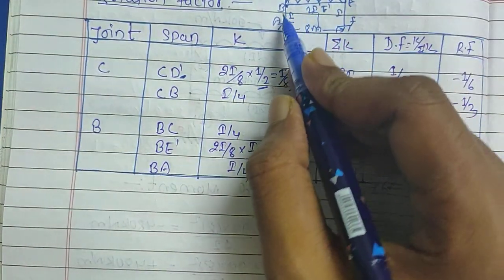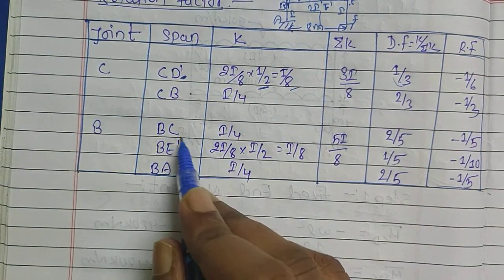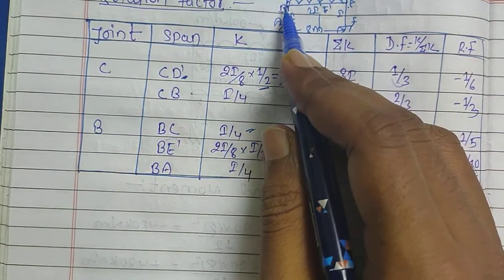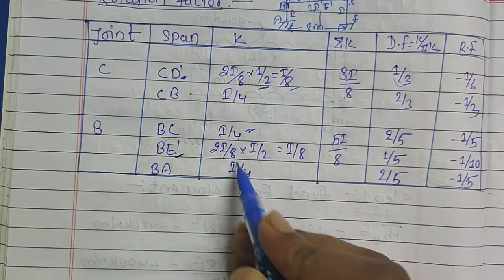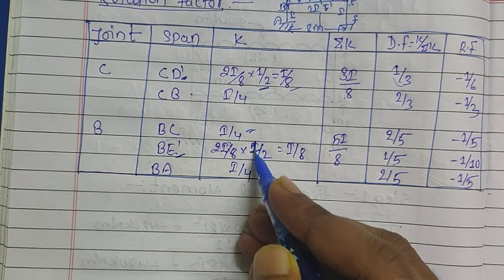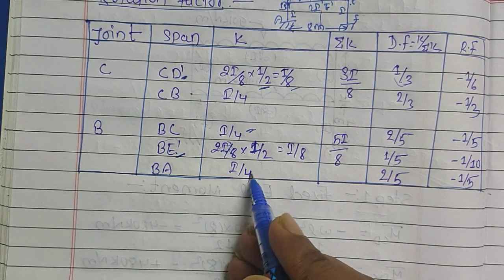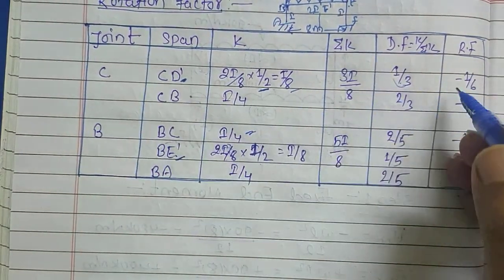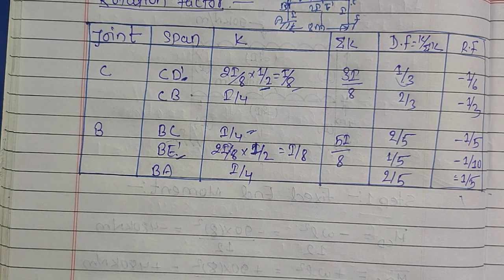After finding each k value, we compute the summation of k, then k divided by the summation gives the distribution coefficient. The rotation factor is the distribution factor multiplied by −1/2. For joint C, multiplying 1/3 by −1/2 gives −1/6. For joint B, there are three spans: BC, BE, and BA. For BC: k = I/L; for BE-dash (half span): k = I/8; for BA: k = I/L. The rotation factors for joint B are found by the same process.